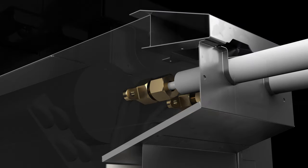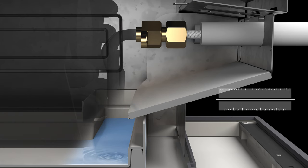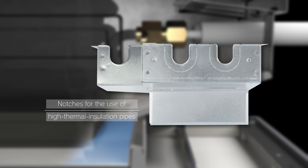The insulation-free cover collects condensation in the drain pan. Notches are provided for the use of high thermal insulation pipes, resulting in improved workability.